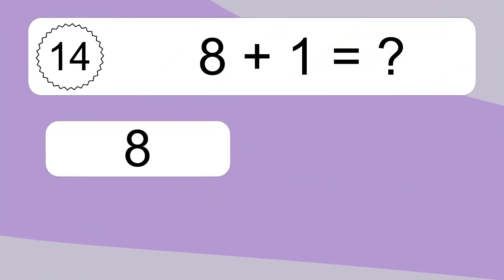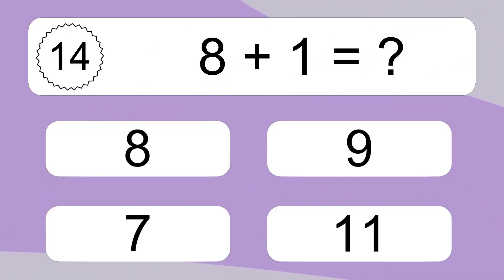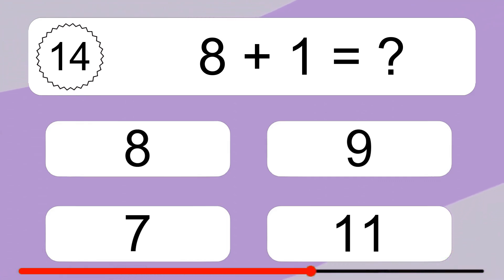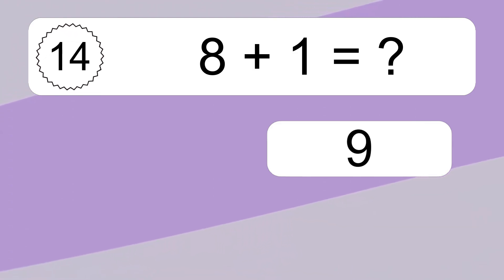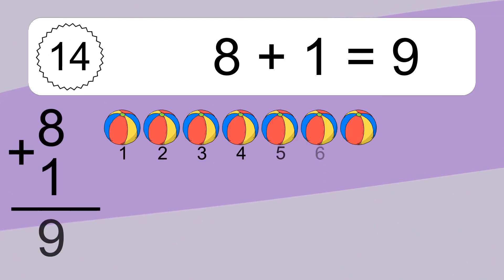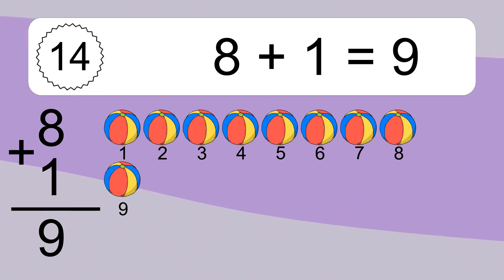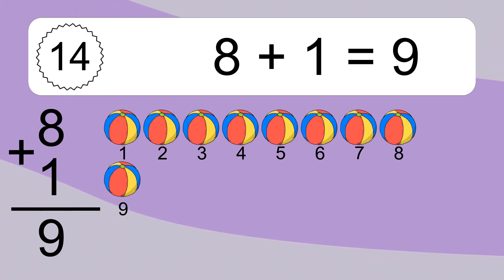Eight plus one equals what? Eight plus one equals nine. Let's count it: one, two, three, four, five, six, seven, eight, nine.